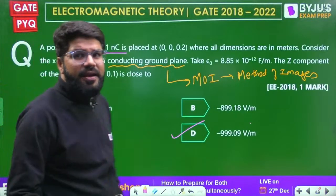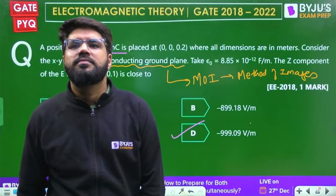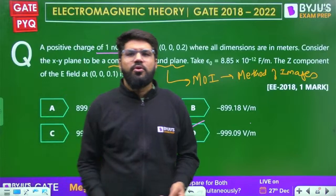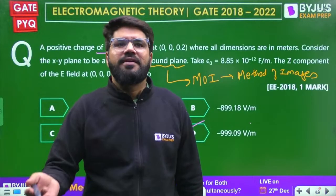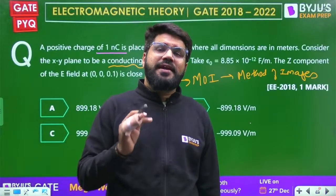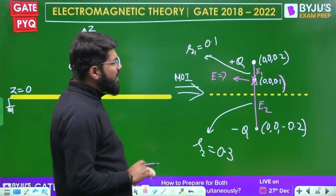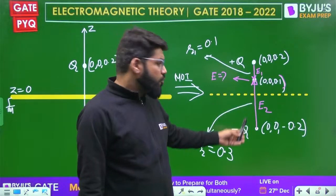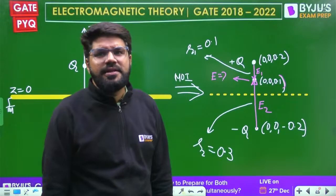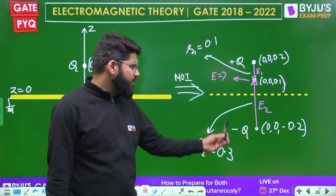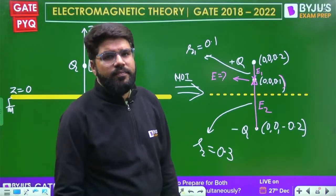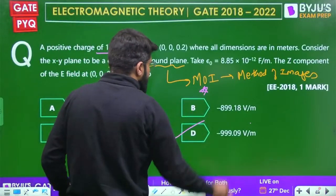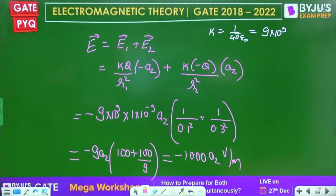The correct answer is approximately -999.09 or -1000 V/m. Either way you adjust the minus sign with the charge or the direction, the result is the same. Method of images is an important expected topic. This was a EE 2022 two-mark question.